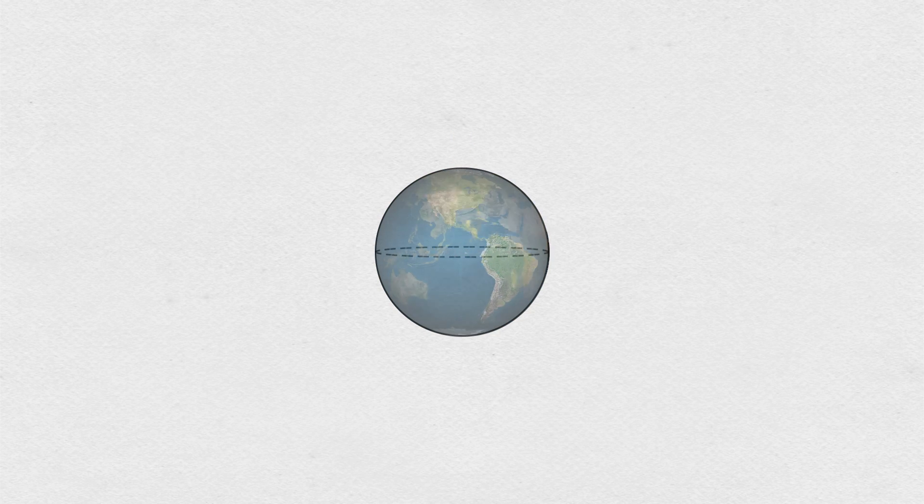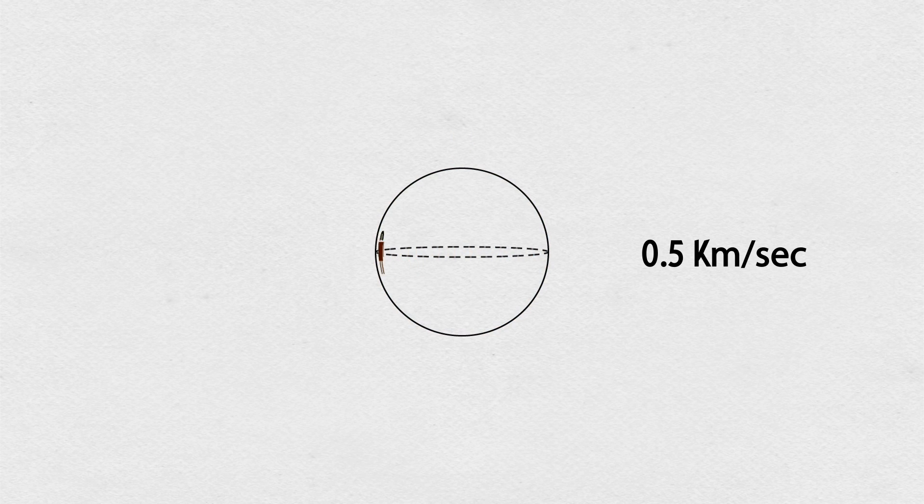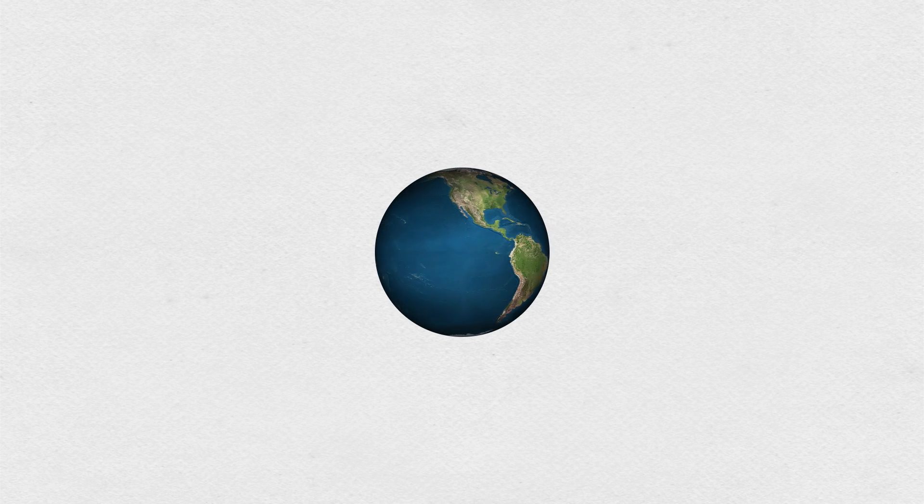If you live somewhere in between the equator and the poles, you would be traveling at some speed less than half a kilometer per second.